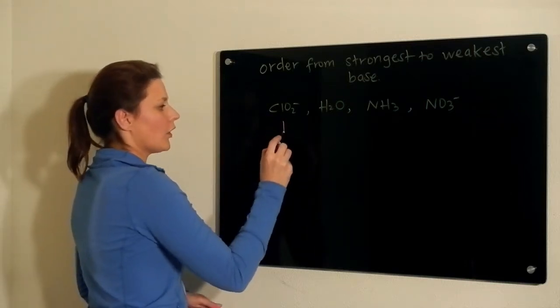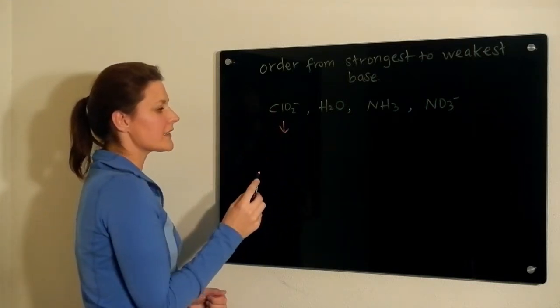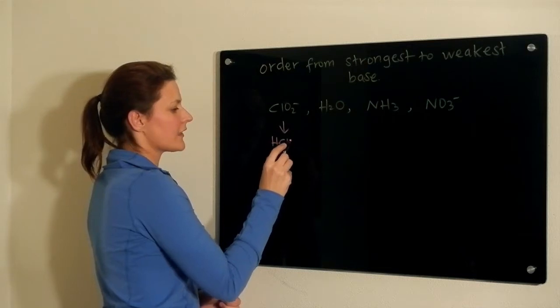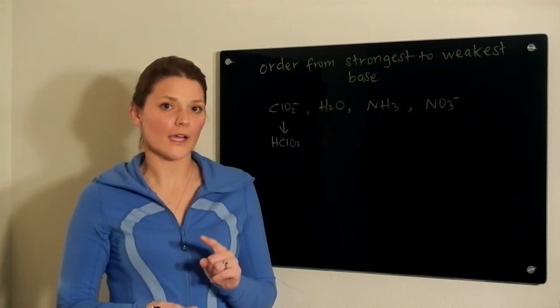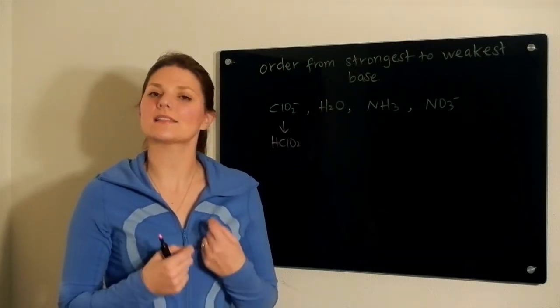So if we do that here, for ClO2- we have a conjugate acid of HClO2. Remember, a conjugate pair differ by one hydrogen and the acid has the extra hydrogen.